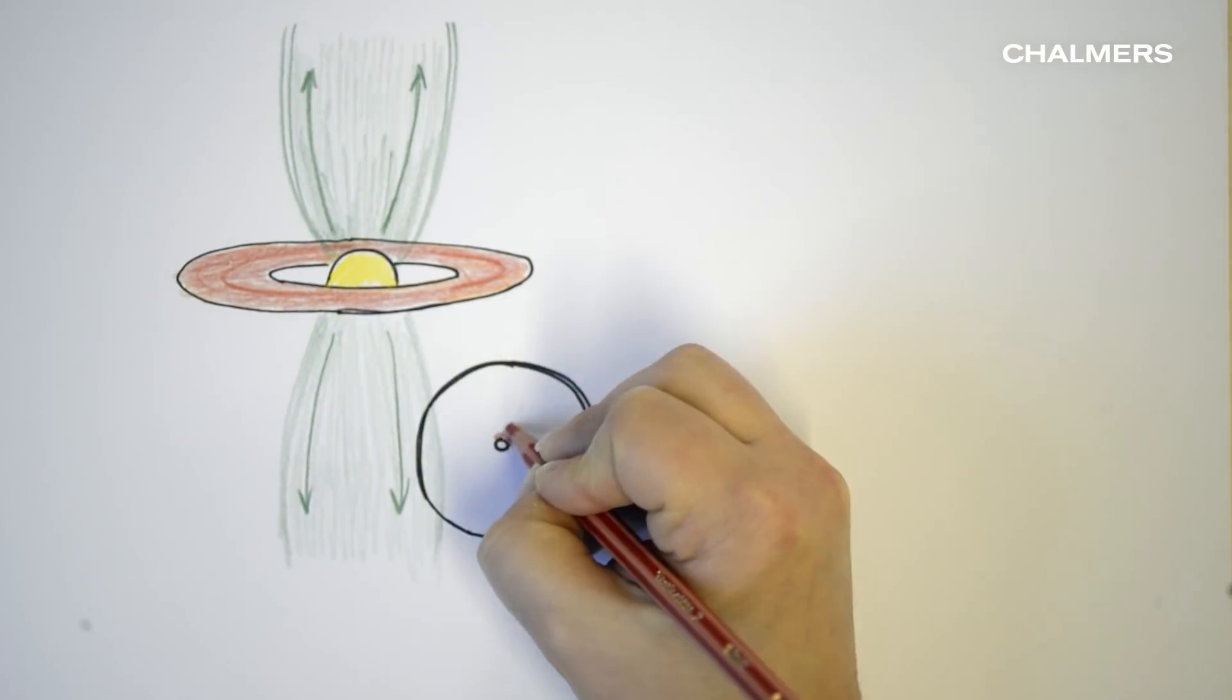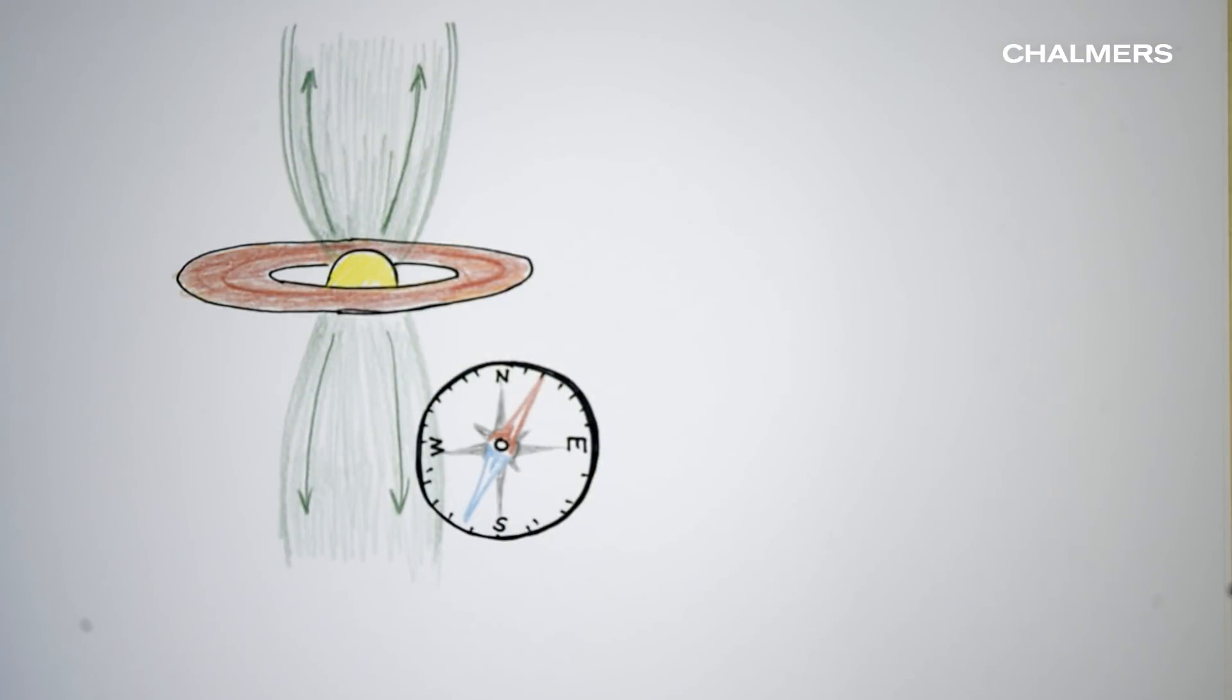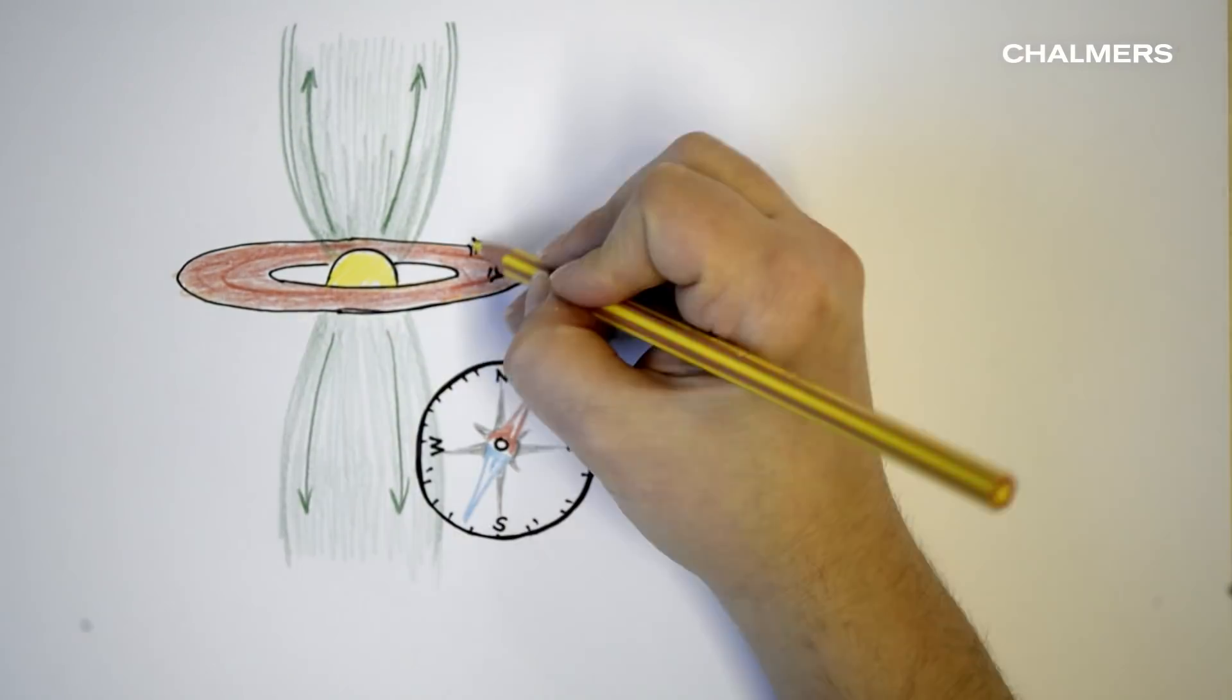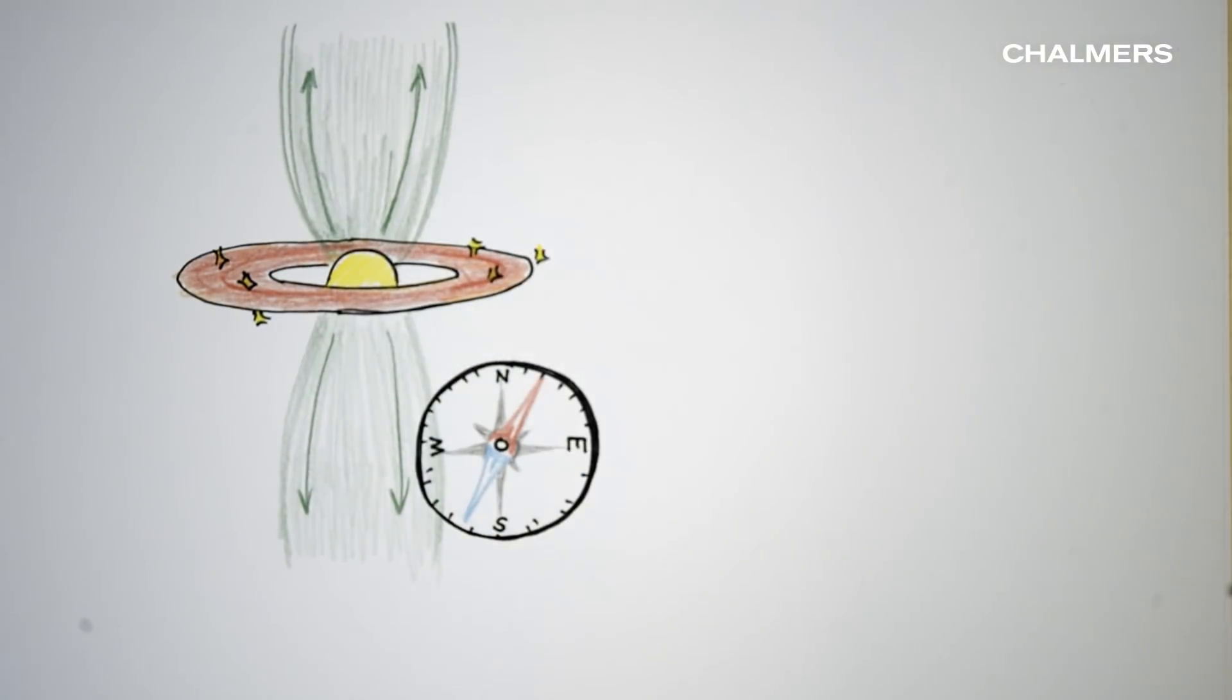But since we can't see magnetic fields with the eye, we need some sort of compass helping us. The compasses might be found in these bright spots around the forming star. These are naturally occurring microwave lasers. Masers.